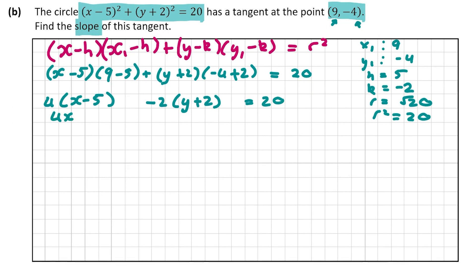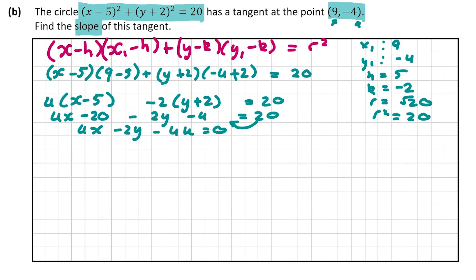Multiplying out, we get 4 times (x minus 5) plus (minus 2) times (y plus 2) equals 20. Expanding: 4x minus 20 minus 2y minus 4 equals 20. So 4x minus 2y minus 24 minus 20 equals 0, giving us 4x minus 2y minus 44 equals 0. This is the equation of the tangent.